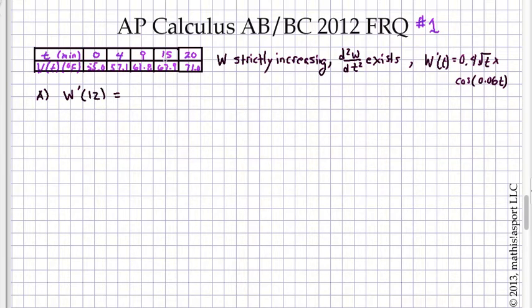W prime of 12, we can calculate by finding the slope of that function between 9 and 15. And so we'll just write 67.9 minus 61.8 and divide by 15 minus 9 and we get 6.1 over 6.